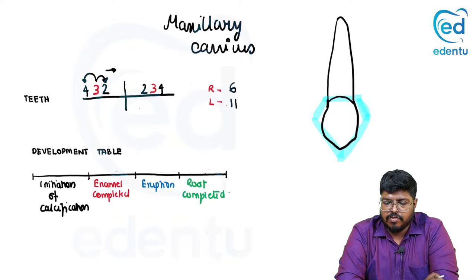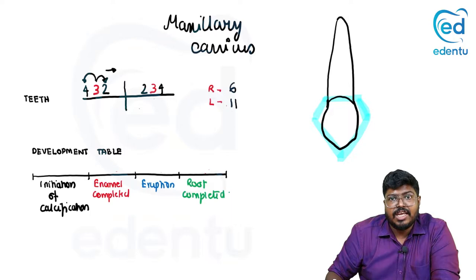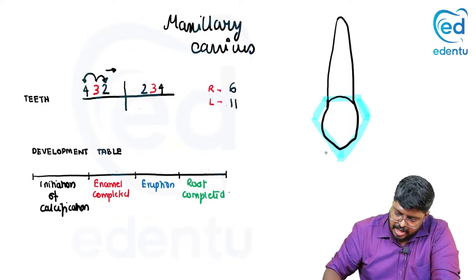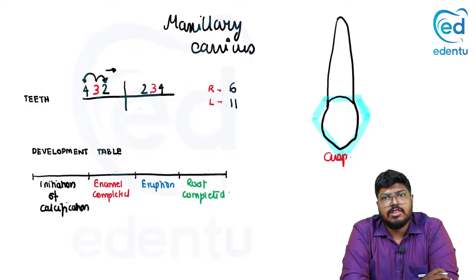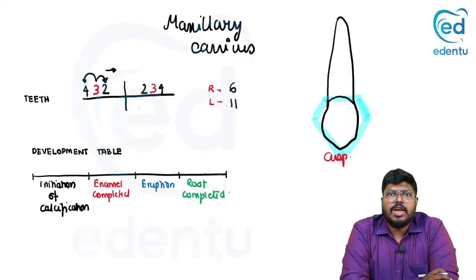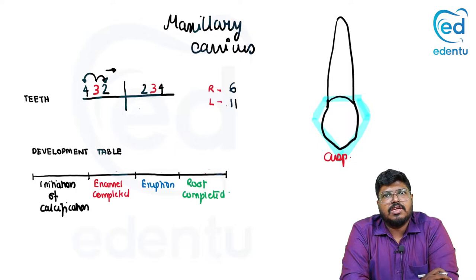Instead of an incisal edge, we now encounter a cusp — a sharp tip that enables us to bite and tear food, including thick vegetables and meat. Canines are derived from the term carnivores. In aesthetic terms, a more prominent canine roughly translates aesthetically to a much stronger personality-inducing individual.